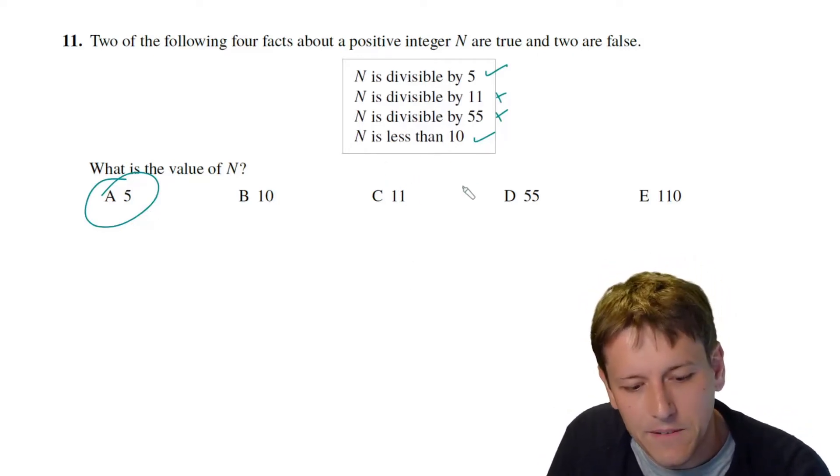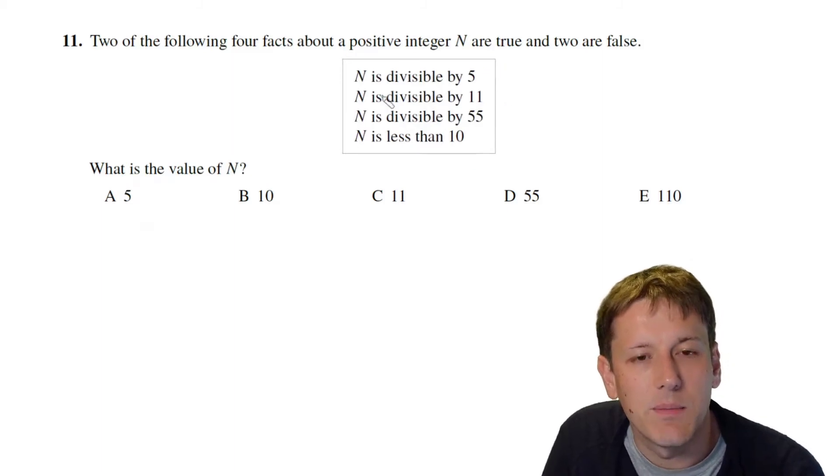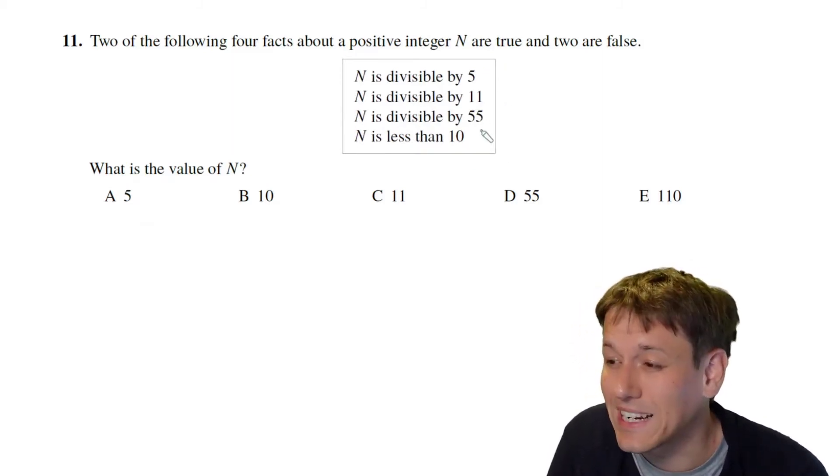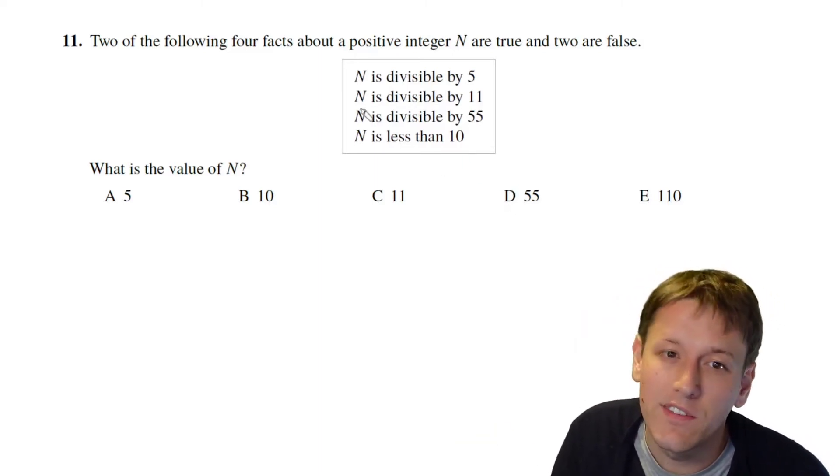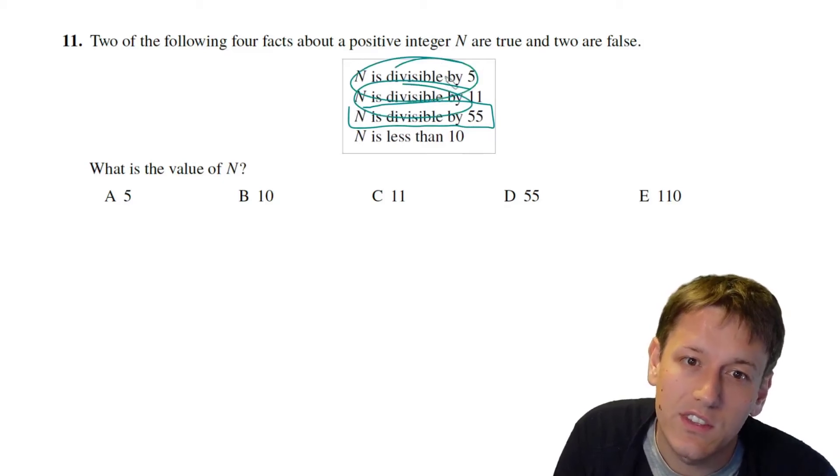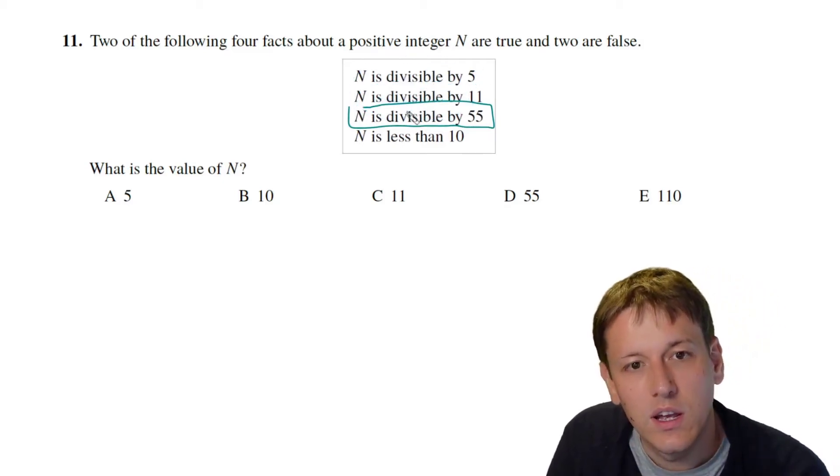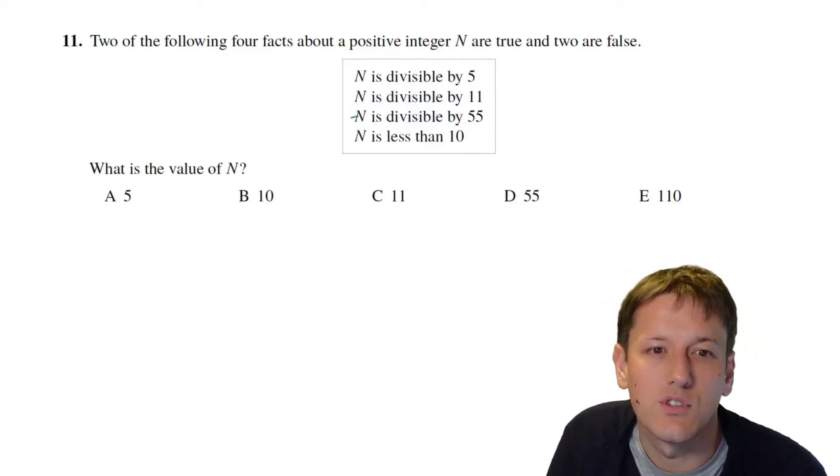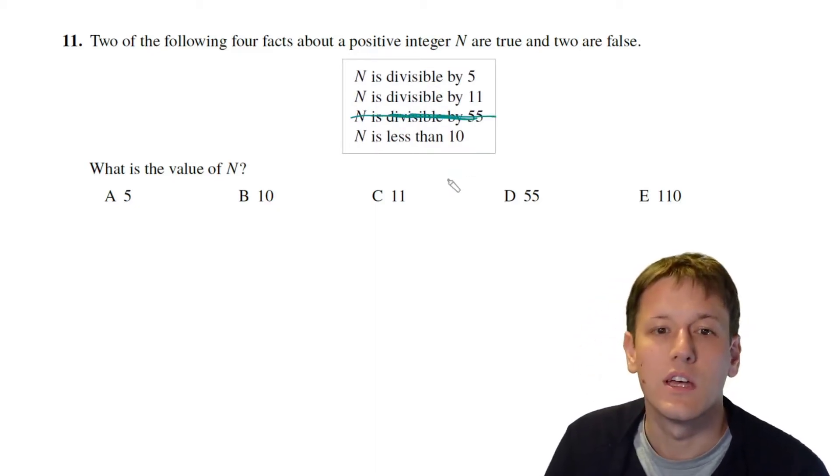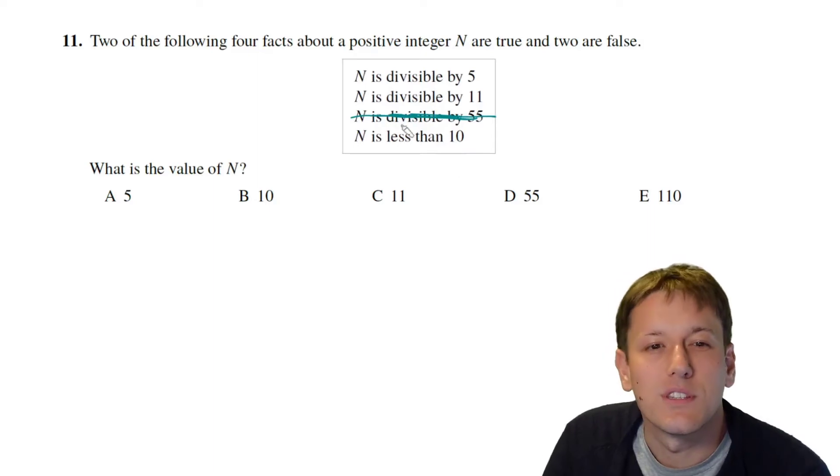Let's just think a little bit more mathematically how we might get there. So if it is divisible by 55 it would automatically have to also be divisible by 11 and divisible by 5. So if this third statement is true then you always have to have the other two being true. So that means if only two of these statements are true it can't be divisible by 55.